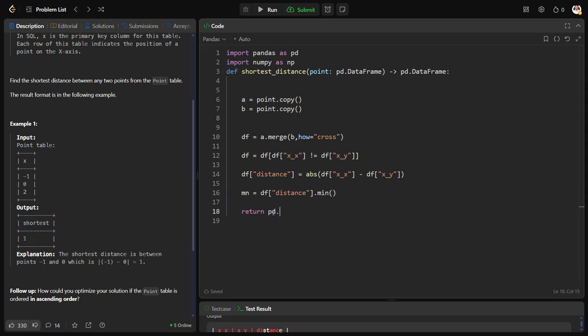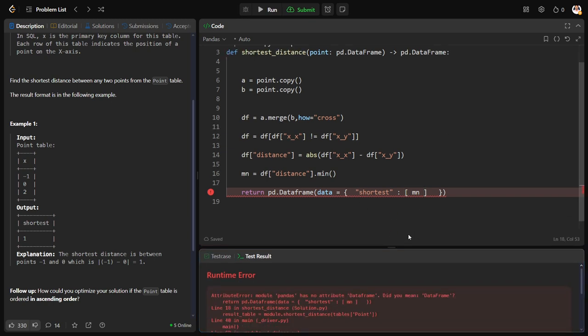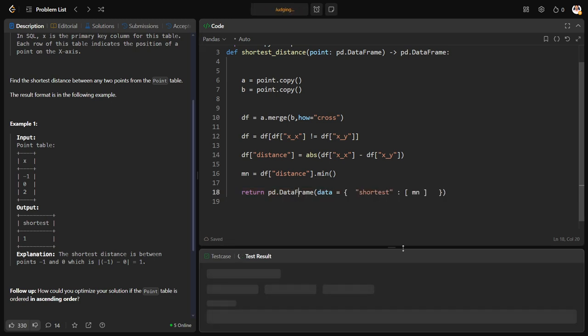Now what I want? I want only the minimum from that. So let me give minimum value equal to df distance column's min. So this will give me a value mn. But what I want? A table. So let me create a table: pd.DataFrame. I am giving a dictionary as a table. This table will have columns and rows. The column is 'shortest'. What are the rows? This mn. All the values should be given as rows. We need to give as a list of elements. So list of mn. DataFrame, F should be capital.